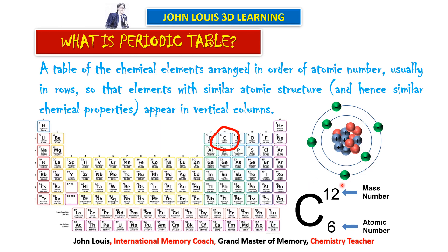What is atomic weight? Out of the three particles, the mass of the electron is negligible compared to protons and neutrons, so we can omit the mass of electrons. The sum of the weights of protons and neutrons present in an atom is called its atomic weight. Mass number is the count of protons and neutrons, whereas atomic weight may be in fraction but mass number cannot be in fraction.